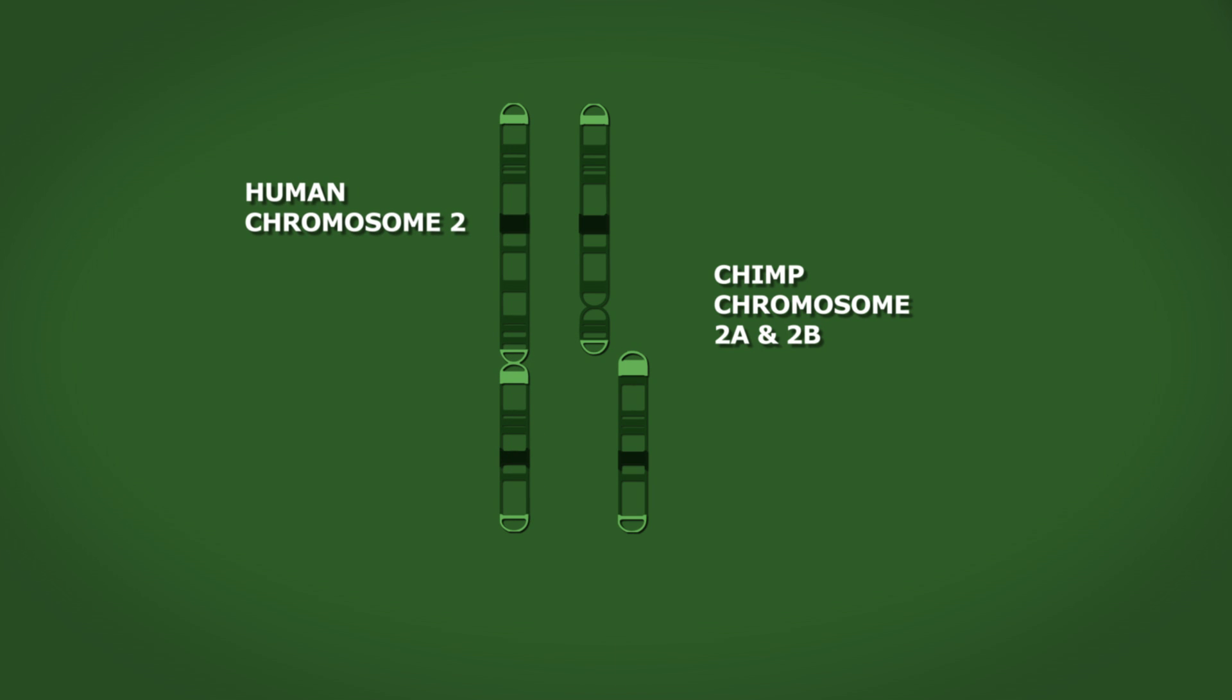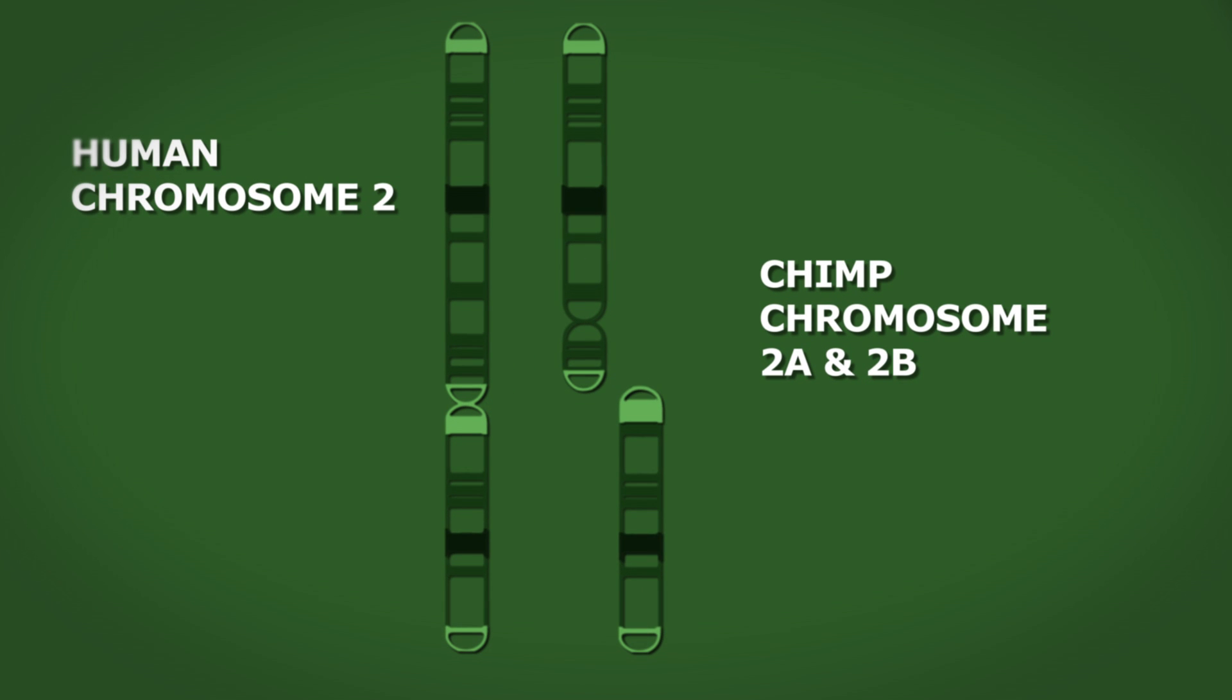It turns out that the DNA sequence of human chromosome 2 is nearly identical to that of two chimp chromosomes laid end to end. Furthermore, the human chromosome has leftover telomere sequences in the middle, as well as an extra centromeric sequence.